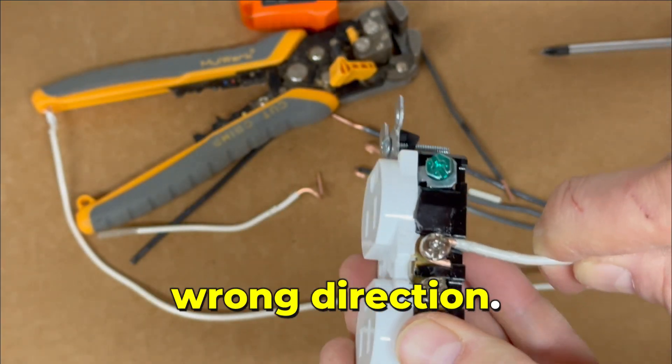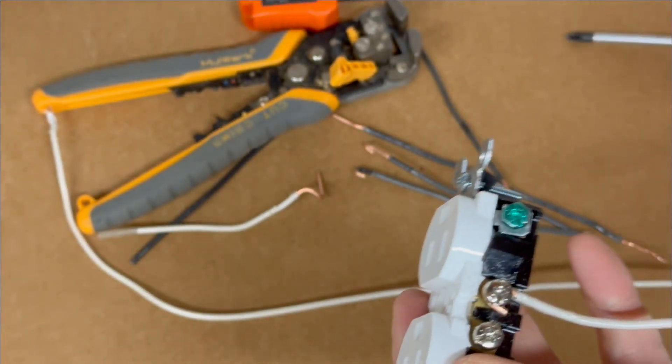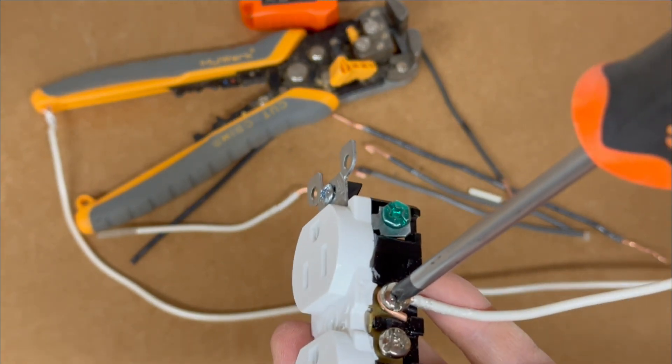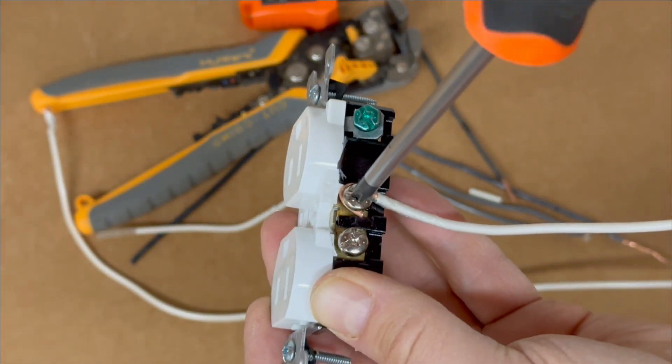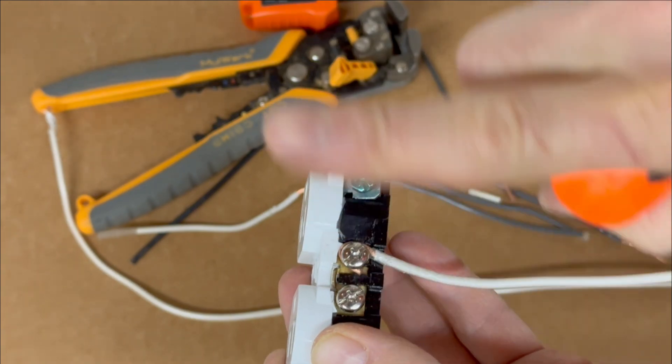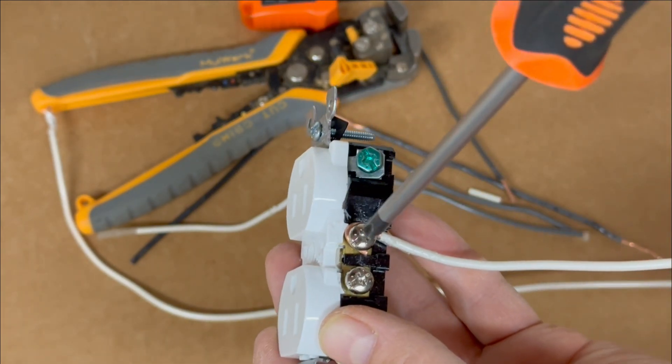Hook in the wrong direction. If I place this hook over the terminal screw in this direction, it's incorrect because it's been installed in the wrong direction: counter-clockwise.